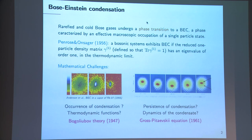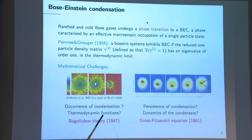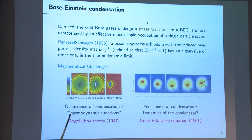From a mathematical perspective, the challenges are understanding in which scaling regime, for which class of interaction, and for which system sizes we can prove the occurrence of Bose-Einstein condensation starting from the microscopic description, and also provide a description of the equilibrium properties of such a system. The heuristic theory for Bose-Einstein condensation from the statistical point of view is Bogoliubov theory, which I will introduce in a moment.